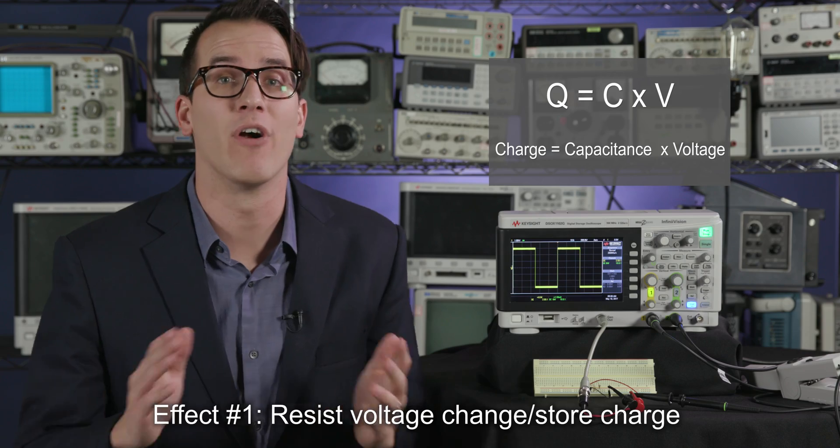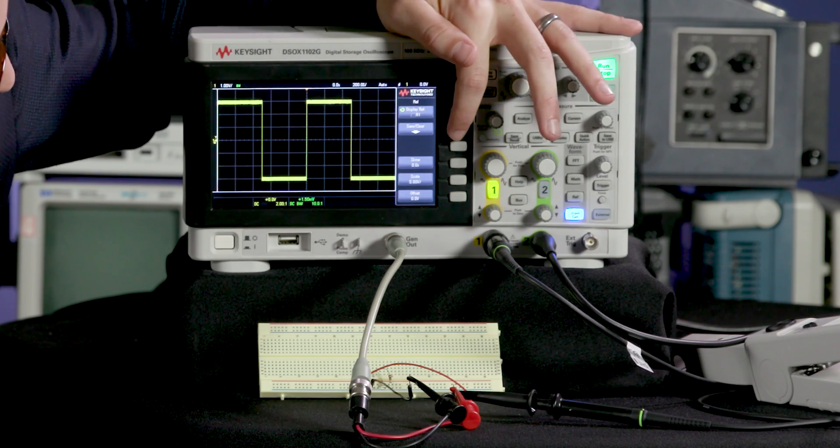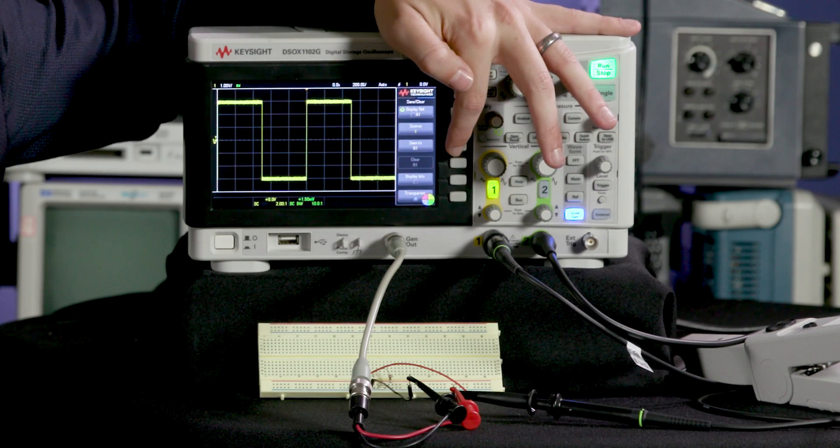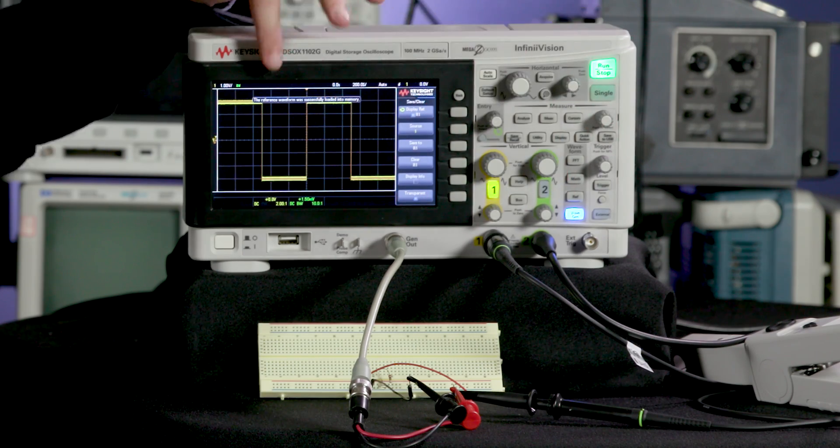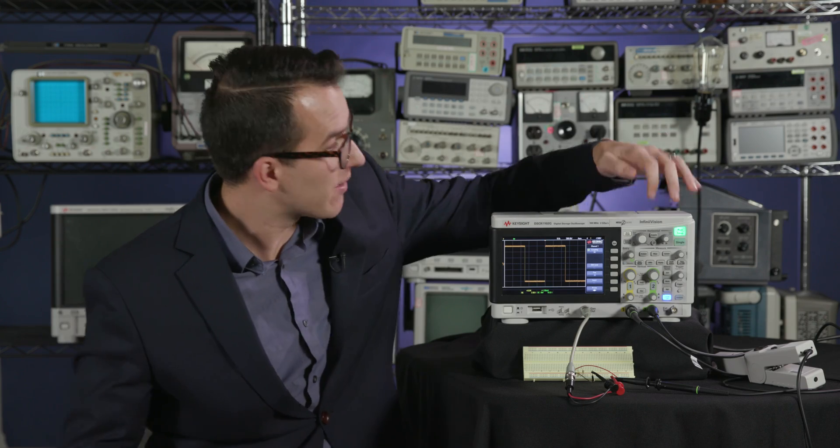So let's add the capacitor and compare before and after. I'm going to save this waveform using a reference waveform, so I hit the reference waveform save to r1, and then I'm going to display it on screen so when I turn off channel one you can actually see that waveform there. Now let's turn channel one back on and add the capacitor.